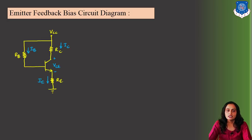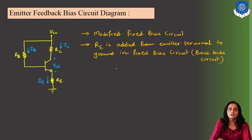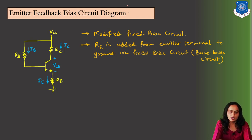So let us see the circuit diagram. This is the circuit for emitter feedback bias, and you can see this is just like the fixed bias or base bias circuit. The only difference is we have included this emitter resistance. So this is why this is also referred to as the modified fixed bias circuit.